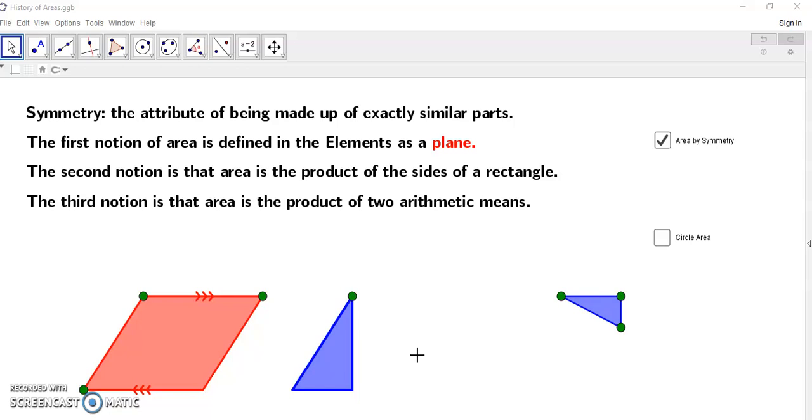Now that was the first notion. The second notion is that an area is the product of the sides of a rectangle. So in other words if you have a rectangle like this then the area would just be this length multiplied by this length, right?